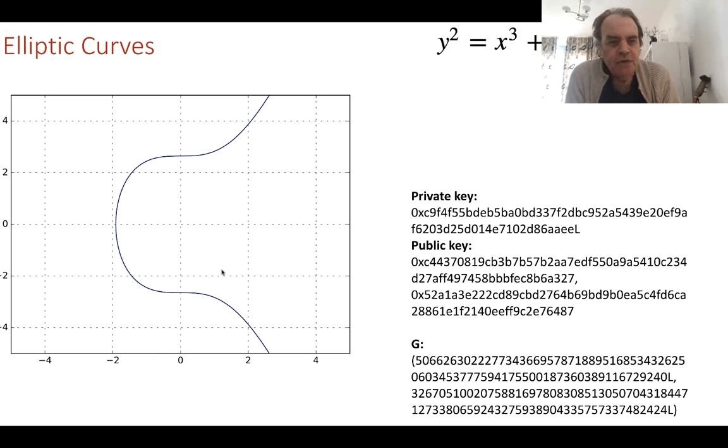Typically what we do is we'll take a base point on the curve and then we'll add it many times, small n times, to give a public key point.